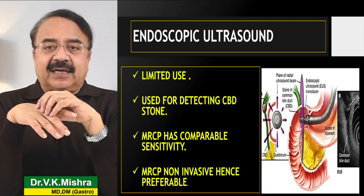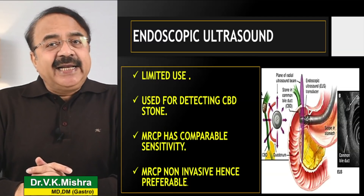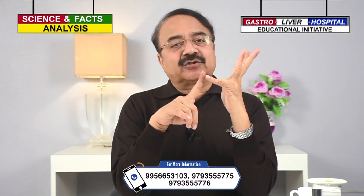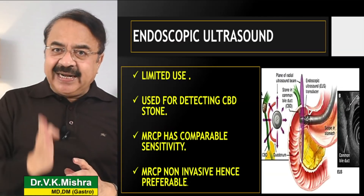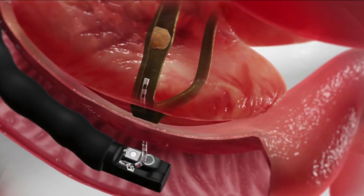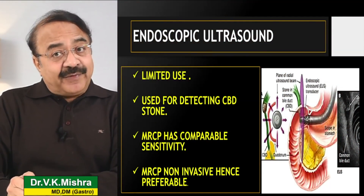Endoscopic ultrasound एक recent और very sensitive modality है, लेकिन acute pancreatitis में इसका use बहुत limited है. इसे use करते हैं if there is a suspicion of common bile duct stone जो ultrasound और CT scan में नहीं दिखाई दे रहा. Scientific data कहता है कि MRCP की efficacy bile duct stone पहचानने के लिए endoscopic ultrasound के बराबर है — और MRCP non-invasive होने के चलते ज़्यादा preferable है.